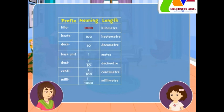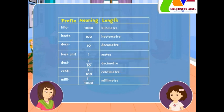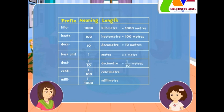Kilo means one thousand. Hecto means hundred. Deka means ten. Deci means one-tenth. Centi means one-hundredth. And milli means one-thousandth. Hence, kilometer is equal to a thousand meters, hectometer is a hundred meters, and similarly the values of the other measures can be seen on the table.